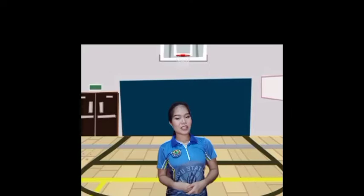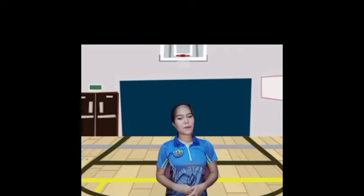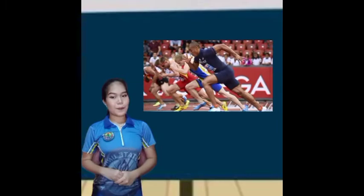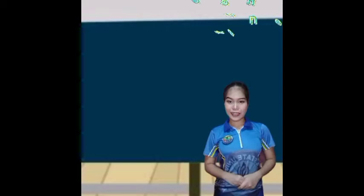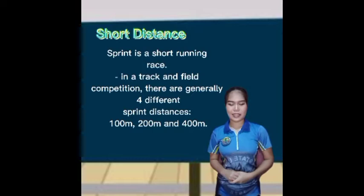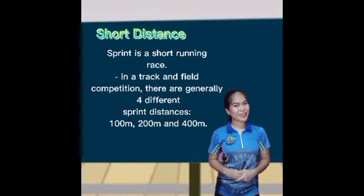Track events often involve a field or a running track of varying measures. These events are typically held in a 400-meter track. These include sprints, middle distance events, long distance events, hurdles, relays, road running, and race walking. Sprint is a short running race. In a track and field competition, there are generally three different sprint distances: 100-meter, 200-meter, and 400-meter.